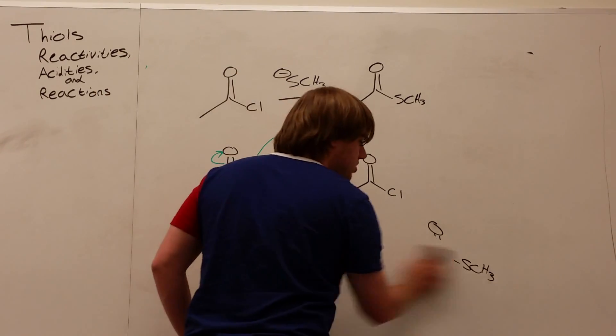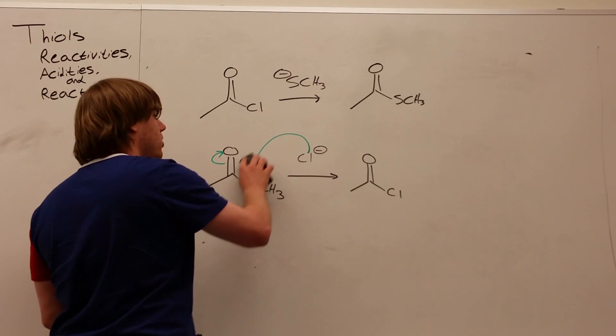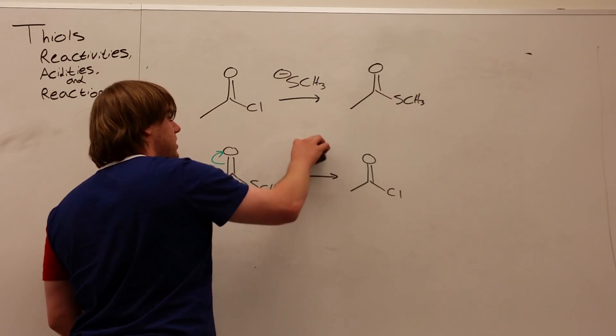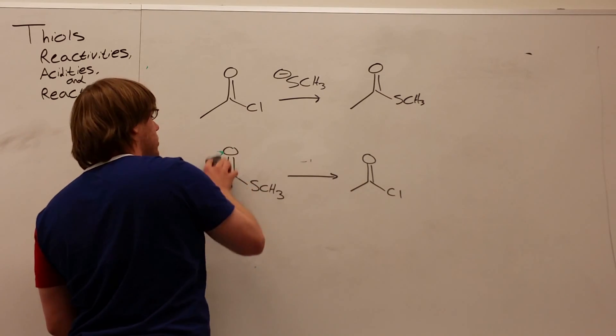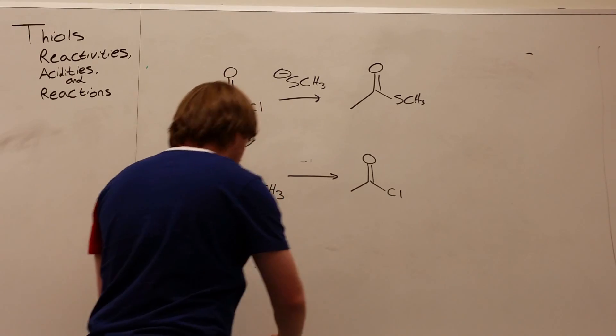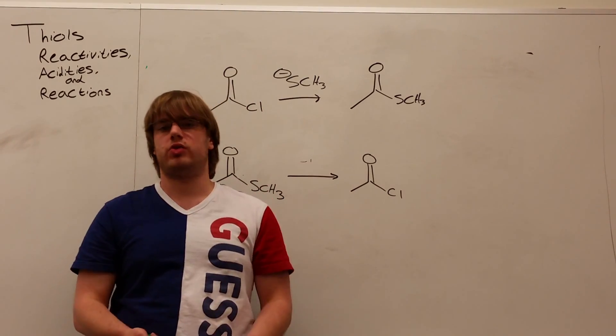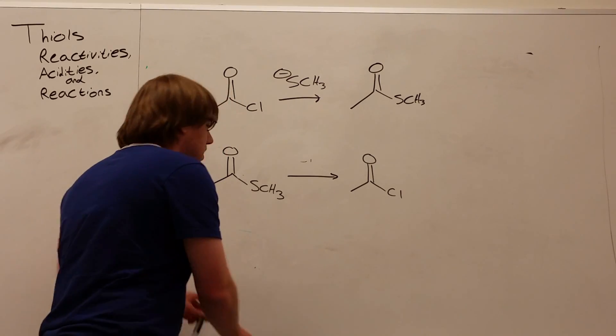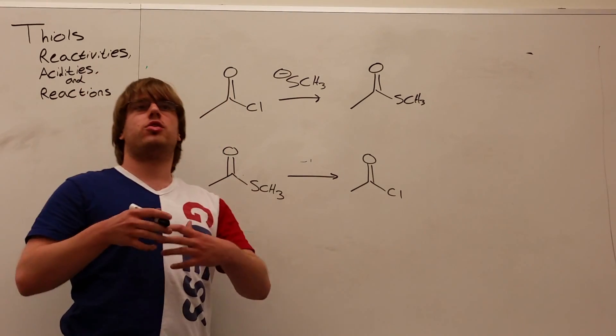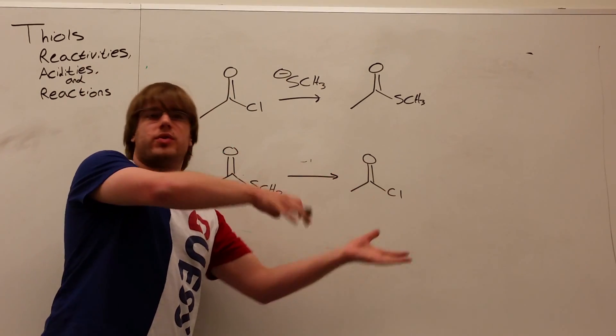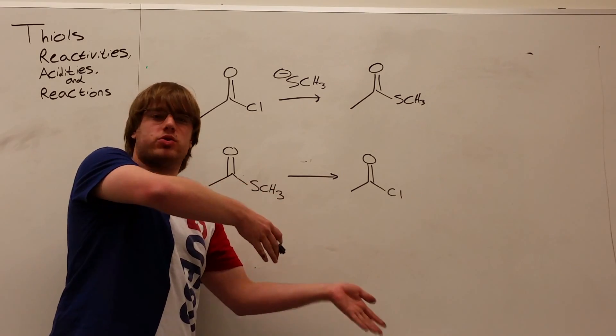Well, since I can't just use Cl minus over the arrow, my goal should be to turn this into carboxylic acid first, and then turn that carboxylic acid into an acyl chloride. So then that begs the question, how do we turn a thioester into carboxylic acid?